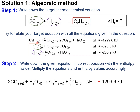Step 2: arrange the three equations so their positions align according to the target thermochemical equation. Make sure the number of moles matches. If the target has one mole, ensure one mole; if two moles, ensure two moles. In the first thermochemical equation, C2H2 is on the reactant side, but in the target it should be on the product side, so you need to reverse this equation. When reversed, the sign of delta H changes from negative to positive.